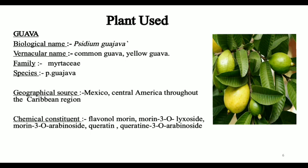Next we are using the plant Guajava. Its biological name is Psidium guajava. Common names include Guava, Common Guava, and Yellow Guava. The family is Myrtaceae and the species is Psidium guajava. Its geographical source is Mexico and Central America throughout the Caribbean region — the Caribbean region refers to the countries present in the Caribbean Sea.